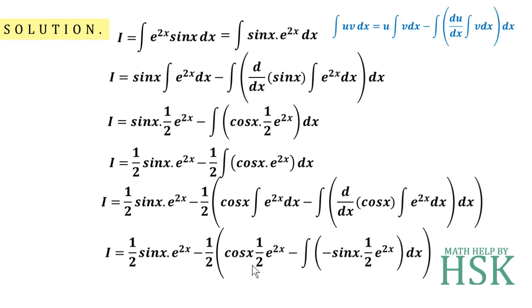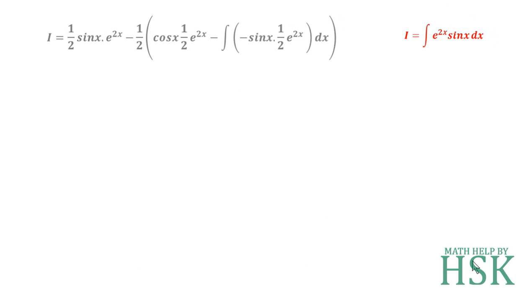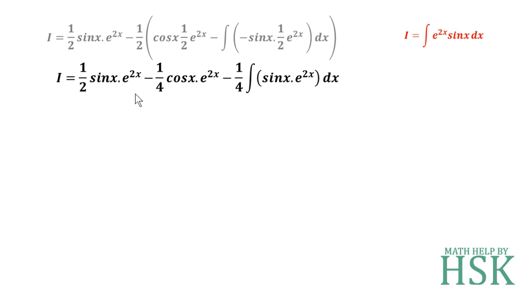Simplifying by multiplying −(1/2) through the bracket, I get −(1/4)cos(x)·e^(2x). The minus times minus becomes plus, giving +(1/2) outside, which multiplies with −(1/2) to give −(1/4) times the integration of e^(2x)·sin(x) dx. Since I assumed i = ∫e^(2x)·sin(x) dx at the beginning, this integral can be written as i.